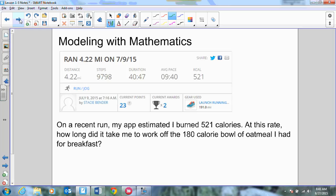Here's another one. On a recent run, my app estimated that I burned 521 calories. That's a lot of calories. At this rate, how long would it take me to work off a 180 calorie bowl of oatmeal that I had for breakfast? Okay. How far did I run? 4.22 miles. It told me how many steps I took, right? And it told me how long I ran. 40, almost 41 minutes. Okay. And my average pace, and so forth.